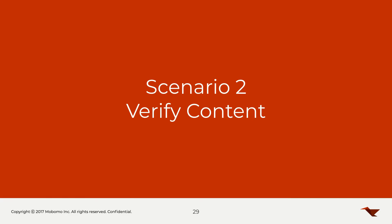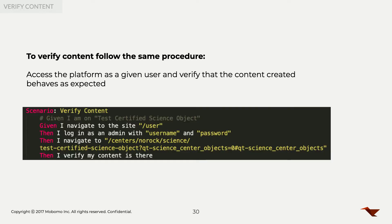Now we go through the second step: verifying that what we created looks how it should. We follow the same procedure — finding elements and interacting with them. This scenario is actually independent from the first one; with Lettuce you can execute different scenarios independently from each other. So we navigate to the site again, log in, navigate to the URL of that specific node, and then verify that the content is there — that's just one Lettuce step, and we'll go into the complexity of that step in the next slide.